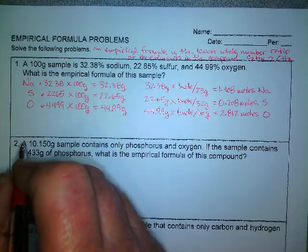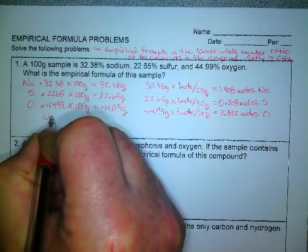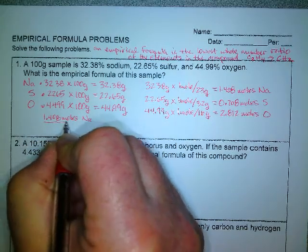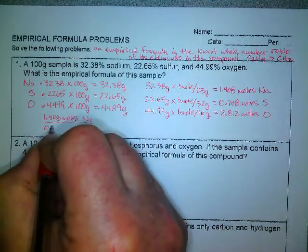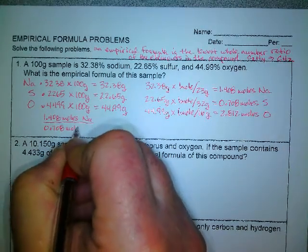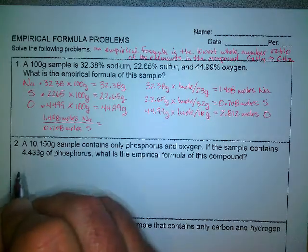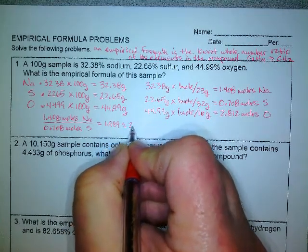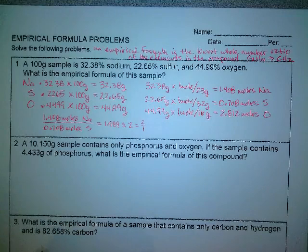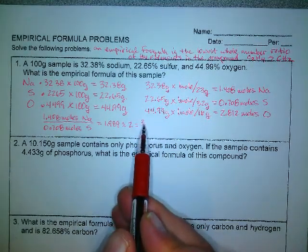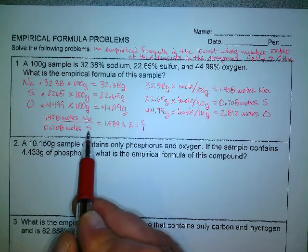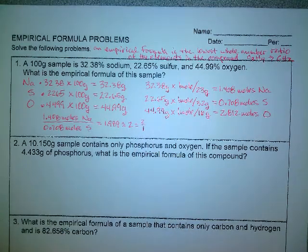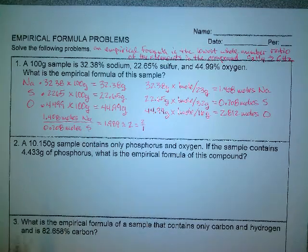So first, I'm going to do sodium to sulfur, so 1.408 moles of sodium to 0.708 moles of sulfur. That comes out to be 1.989, which is about 2, which would be a ratio of 2 to 1. So what that tells me is, for every one atom of sulfur, the compound would have two atoms of sodium, or one mole of sulfur would be 2 moles of sodium.